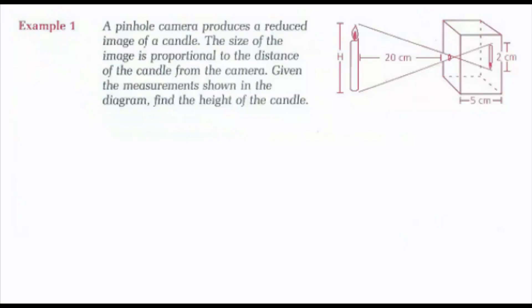Looking at this example we have a pinhole camera produces a reduced image of a candle. The size of the image is proportional to the distance of the candle from the camera. Given the measurements shown in the diagram, find the height of the candle. Notice here how it says it's proportional in distance, so I can create a proportion to solve for h, the height of the candle.